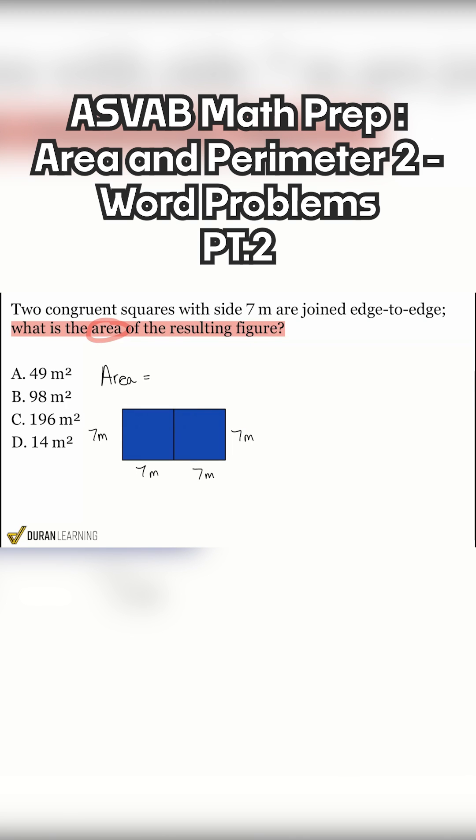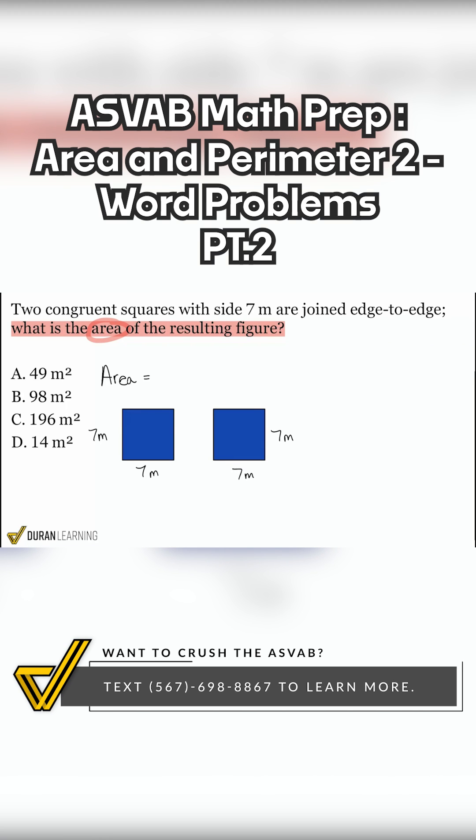you can consider that a rectangle or since it's just the sum of the areas, we can think about it as two separate squares. Either way, it works just fine. So if you think about it like that, like the area of square one plus the area of square two,